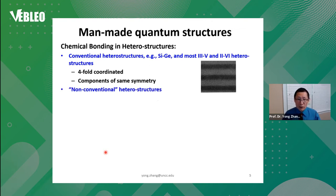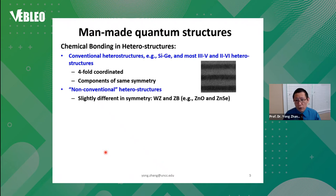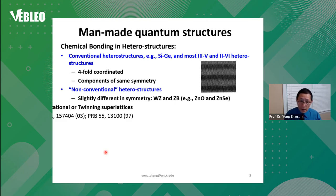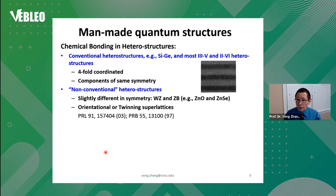There are some things slightly non-conventional and less usual. For instance, you have two structures with slightly different symmetry — for instance, wurtzite and zincblende — they have slight differences in symmetry but are quite similar. And there is another type of more subtle heterostructures, what we call orientational or twinning superlattices.